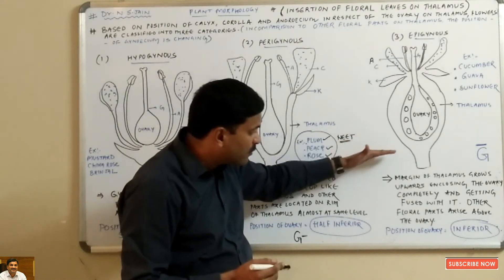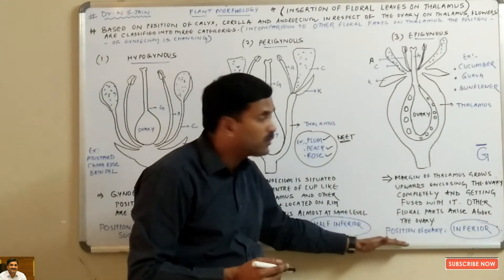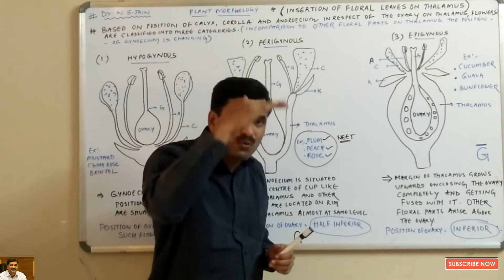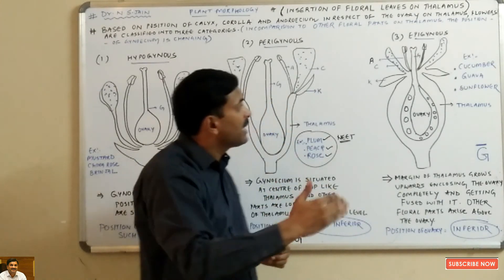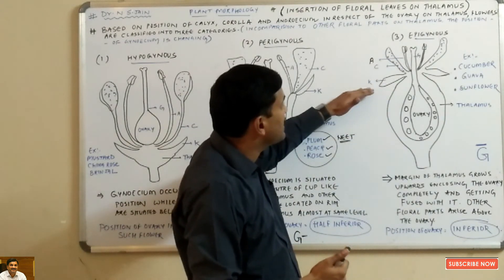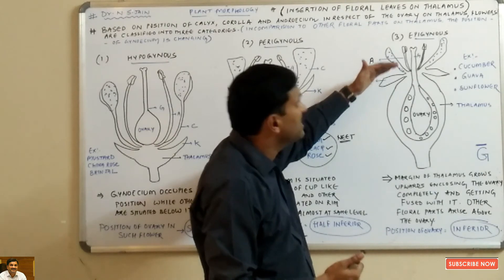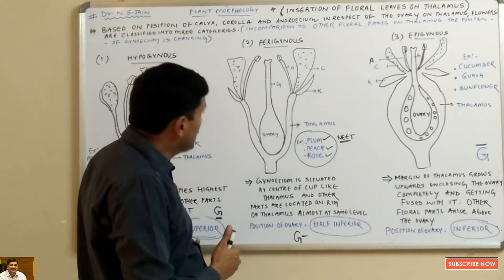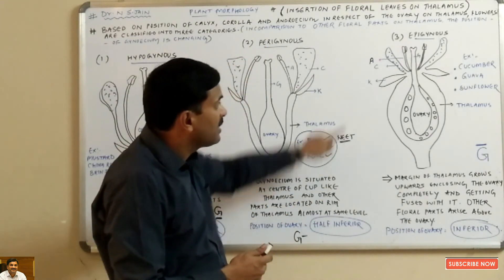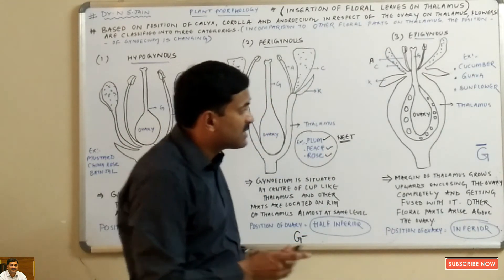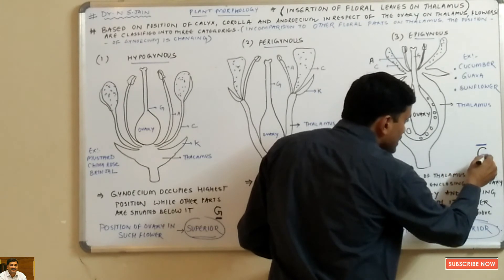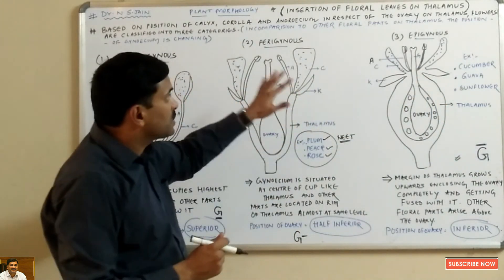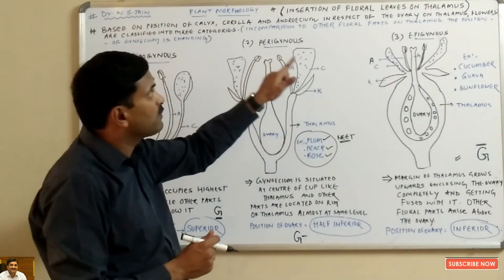The position of the ovary in an epigynous flower is inferior — the ovary is at the base, at the least position, and all the other floral parts (calyx, corolla, and androecium) arise from the top of the ovary. Such a flower is called an epigynous flower. To represent this condition, we write G and put a slash above the G. This represents the epigynous or inferior ovary condition. This was all about the insertion of floral leaves on the thalamus.